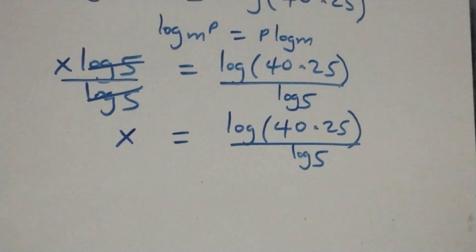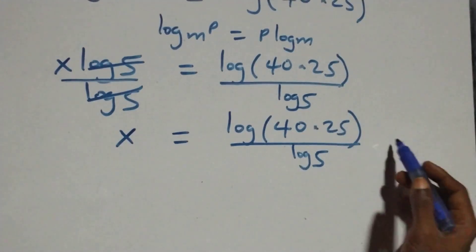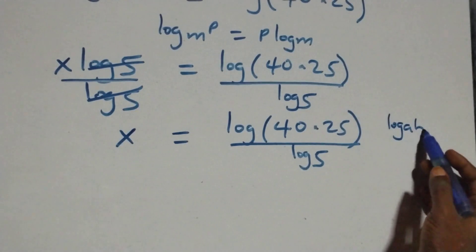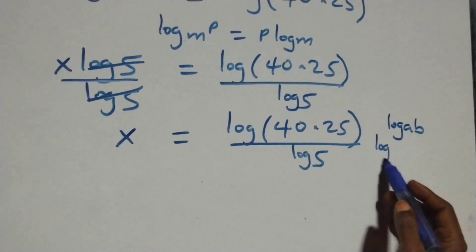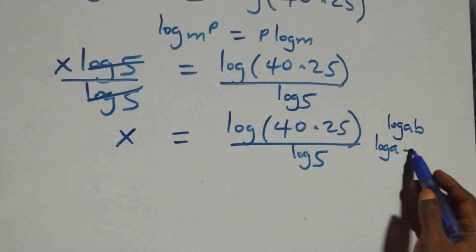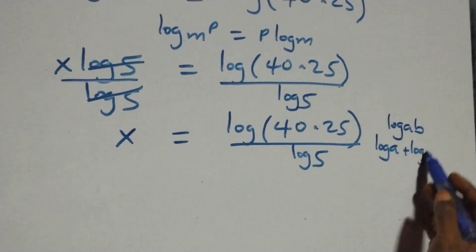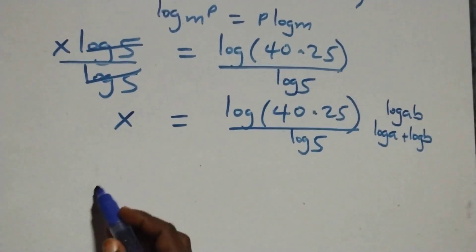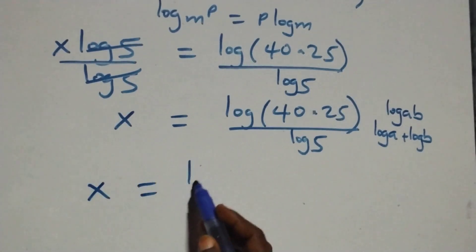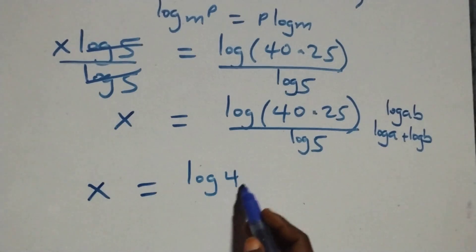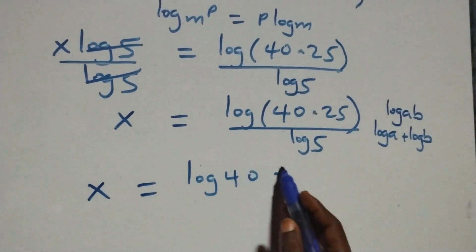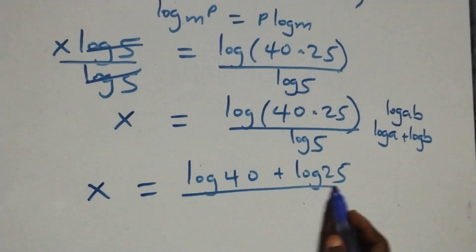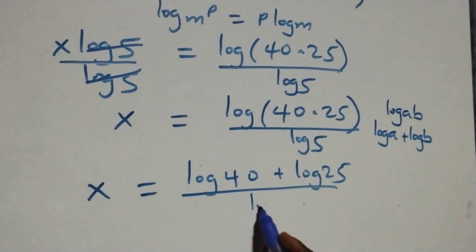We apply the product rule of logarithm: log of a times b is the same as log a plus log b. So x equals log forty plus log twenty-five over log five.